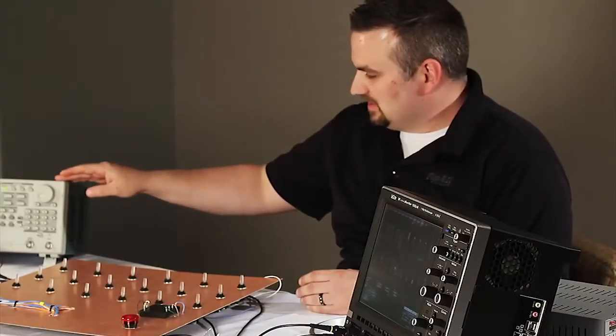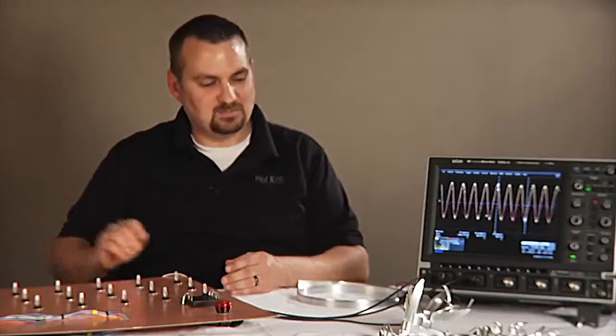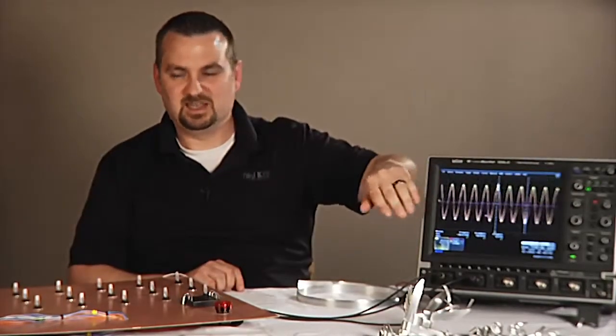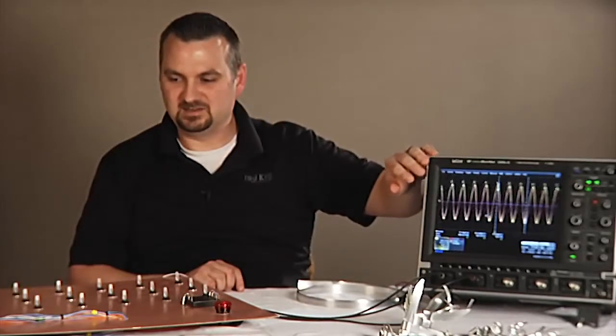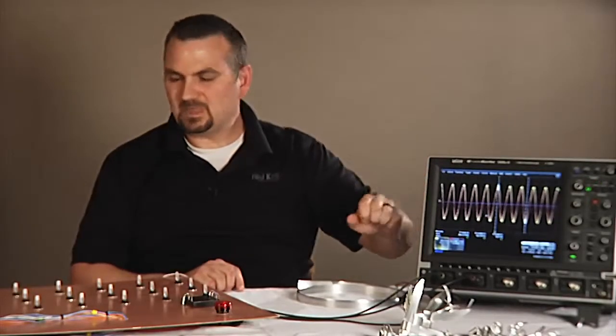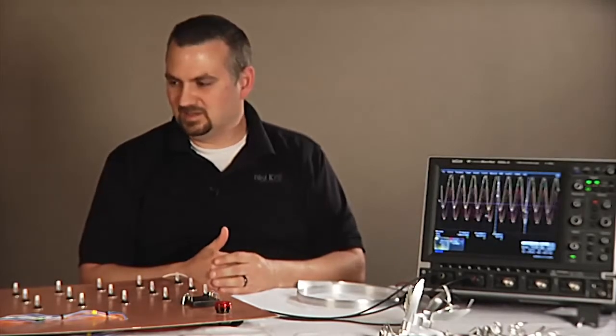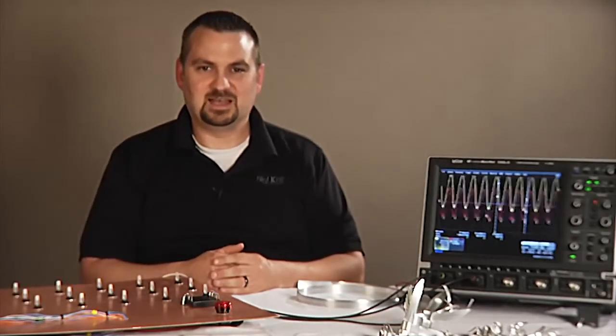Our function generator is inputting a 1 megahertz signal into the cable, which is seen here as the pink signal. The yellow signal is the same signal after it goes through the SL8800 twin axial cable. The cable is rated at 5 gigahertz as a typical signal, but 1 megahertz is the limits of our generator, so we'll have to work with that.